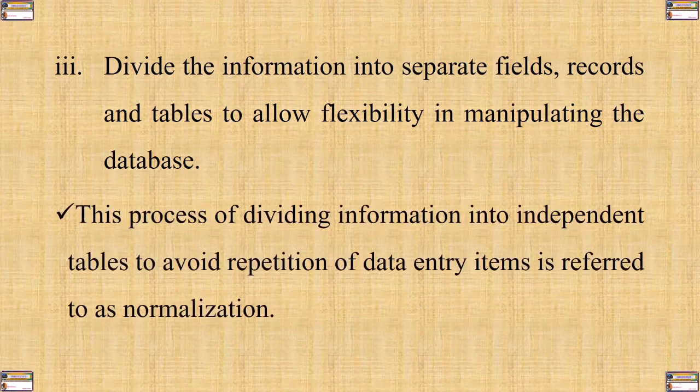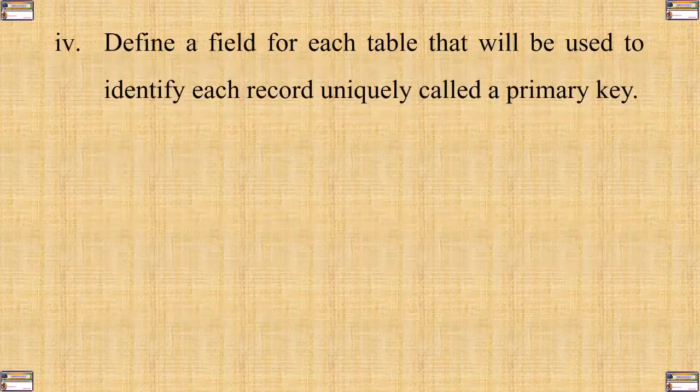This process of dividing information into independent tables to avoid the repetition of data entry items is referred to as normalization. Number four: define a field for each table that will be used to identify each record uniquely, which we call a primary key.